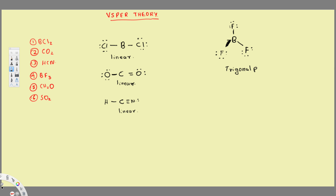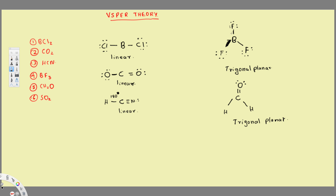CH₂O is the same — it also has three atoms around the central atom, so it's also going to be trigonal planar. Carbon has a double bond to O with four electrons, and two hydrogens at the bottom. The central atom has eight electrons, so this one follows the octet rule. The angle for the linear shape is 180 degrees, but for trigonal planar, 360 degrees divided into three parts gives each bond angle as 120 degrees.